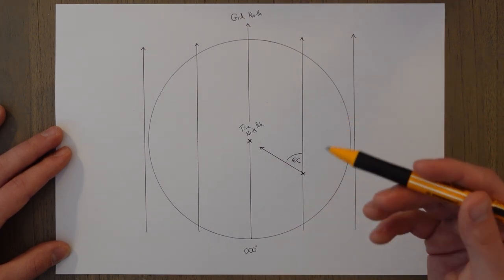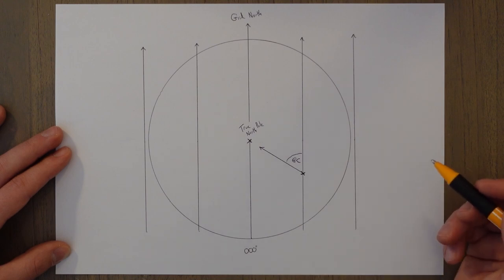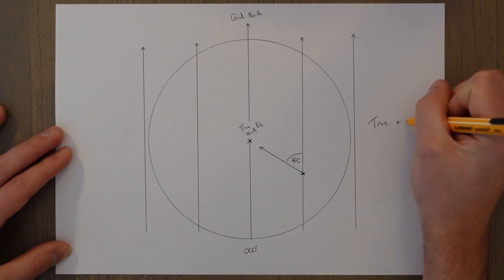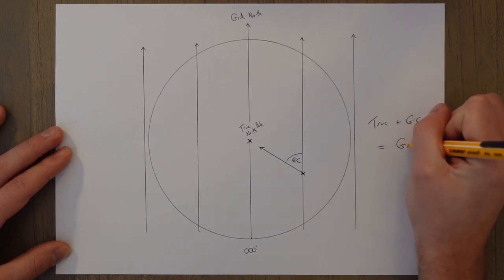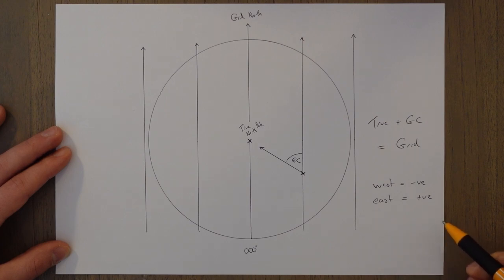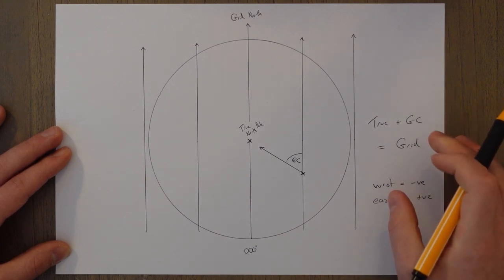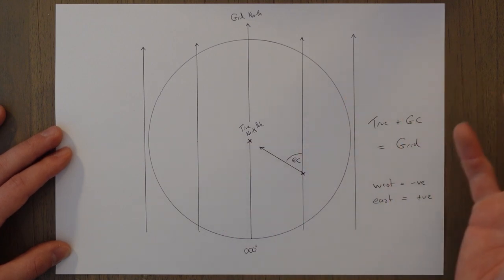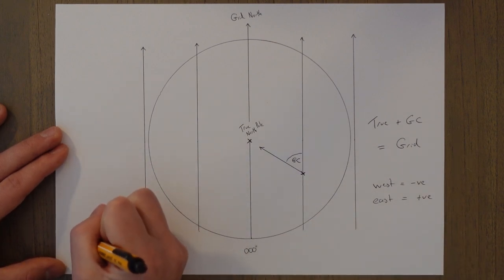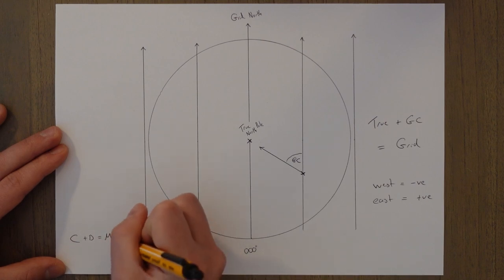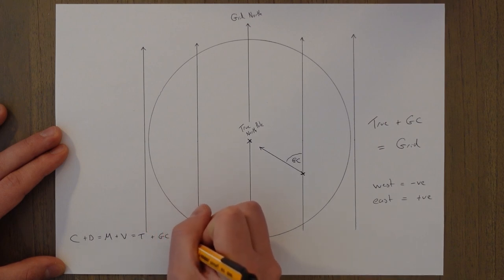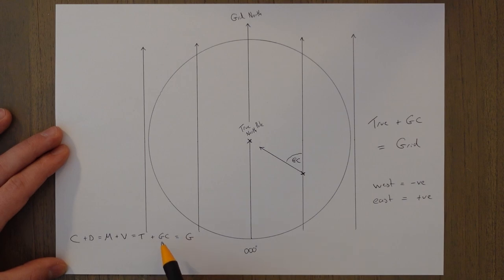We can easily convert from grid north to true north using the grid convergence with a very simple equation: True direction plus grid convergence equals grid direction, where west is negative and east is positive. We can add that onto the end of our Calvary's Dairy Milk Very Tasty equation: compass direction plus deviation equals magnetic direction, plus variation equals true direction, plus grid convergence equals grid direction — CDMVTGCG.